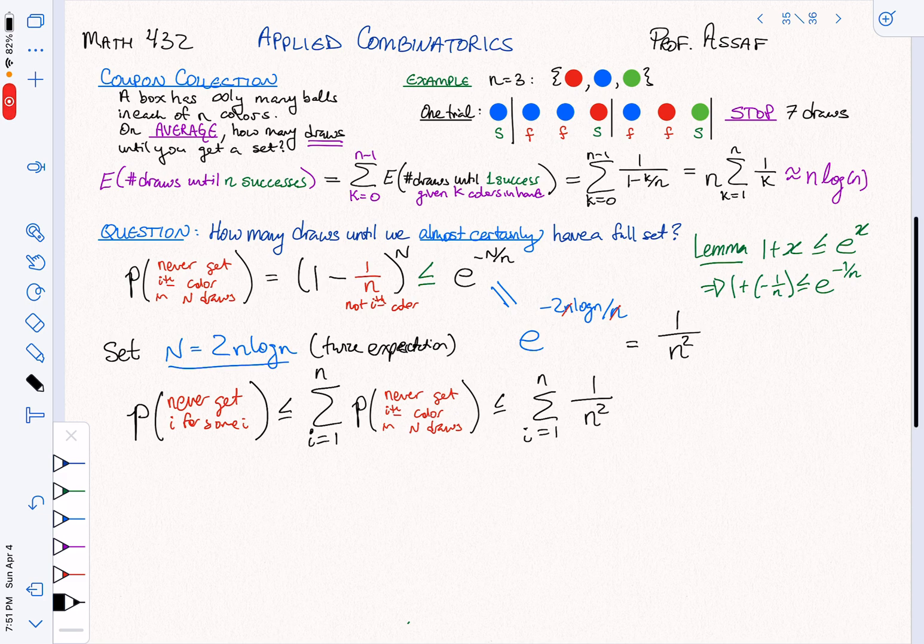Because that was the bound we just worked out. But now I'm summing from i equals 1 to N. There's no i over here anymore, so I just have it N times. This is just equal to N times 1 over N squared, which is 1 over N.